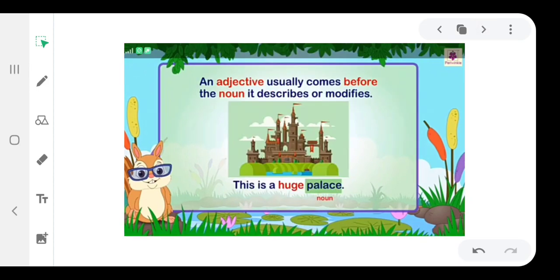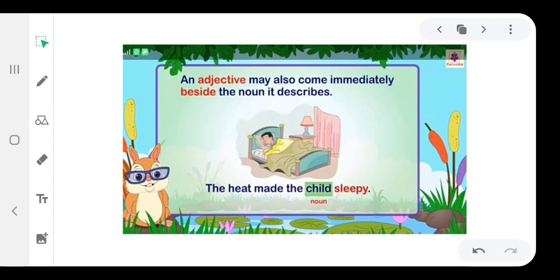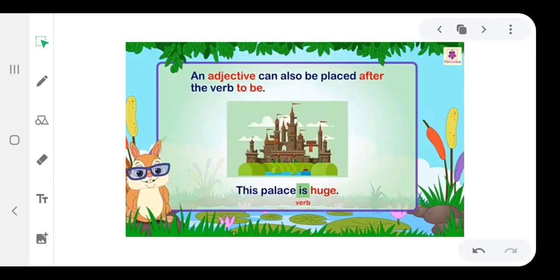An adjective usually comes before the noun it describes. For example, this is a huge palace. Palace is a noun. An adjective may also come immediately beside the noun it describes. For example, the heat made the child sleepy. Child is a noun. An adjective can also be placed after the verb to be. For example, this palace is huge. Is is a verb.